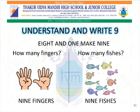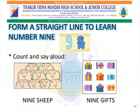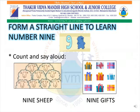Now we will learn about number 9. Understand and write number 9. 8 and 1 make 9. 9 fingers. How many fishes? 9 fishes. Form a straight line to learn number 9. Count and say aloud: 9 sheep, 9 gifts.